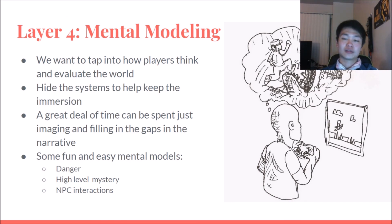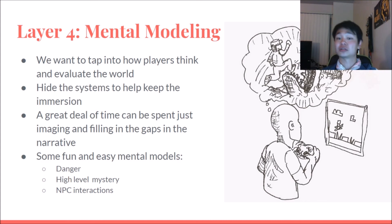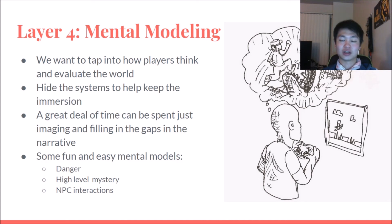Lastly, we have layer four: mental modeling. The goal is to tap into the way the player imagines and thinks about the game. Players will be coming up with their own mental models — a mental representation of what is shown on screen — similar to reading a book or watching a film. A big goal is to hide your gameplay systems: having your game's guts exposed can be extremely immersion-shattering. Have what's shown to the player line up with knowledge and intuition of the real world. Mental modeling is also a valid form of gameplay — just showing your character and environment as they travel, letting the player imagine from small clues in the world, is also gameplay.